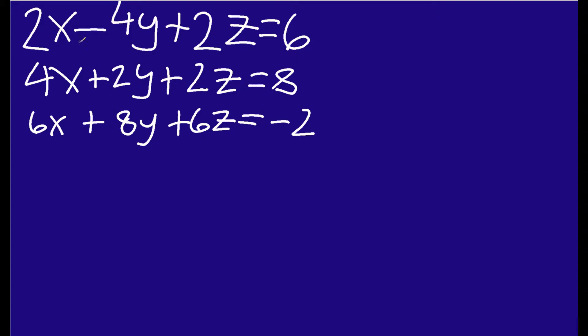You can see right here I have my three equations. The reason I have three is because I have three variables. Every time you add a variable, you add another equation to the model. This is kind of like modeling something that happens in three-dimensional space — you have the X and the Y coordinates and also the Z coordinates. We have: 2X minus 4Y plus 2Z equals 6; 4X plus 2Y plus 2Z equals 8; and 6X plus 8Y plus 6Z equals negative 2.